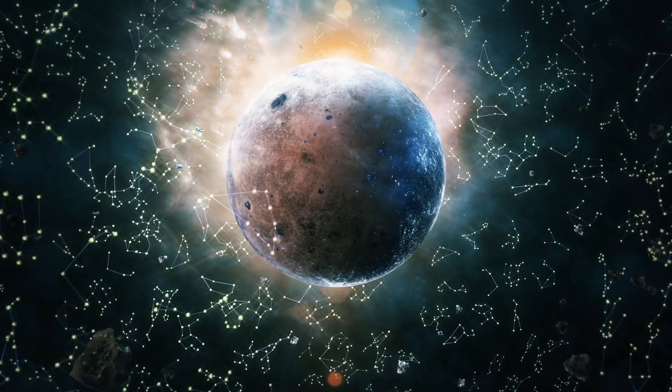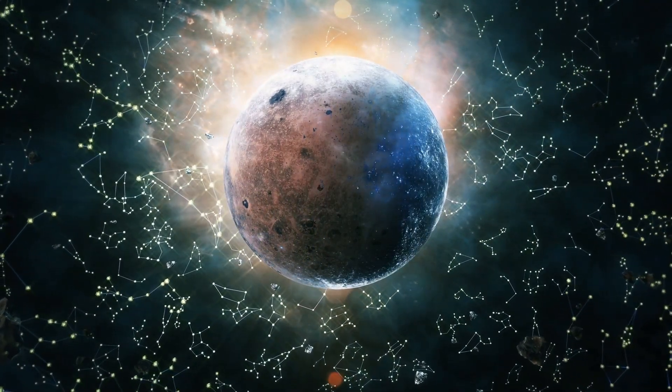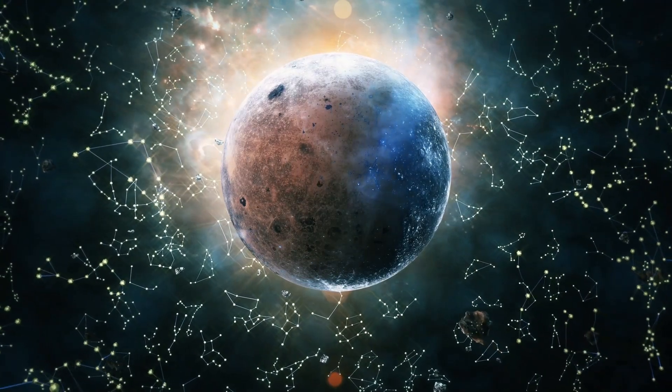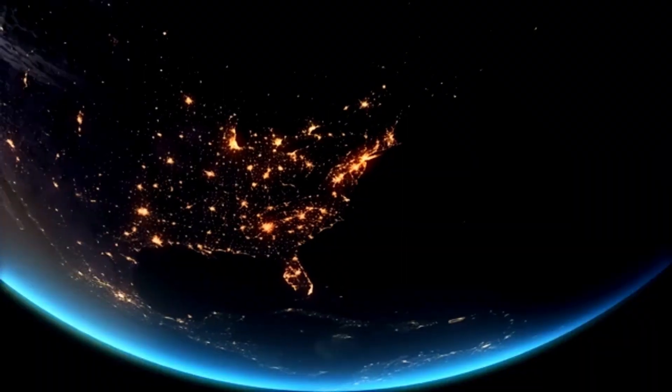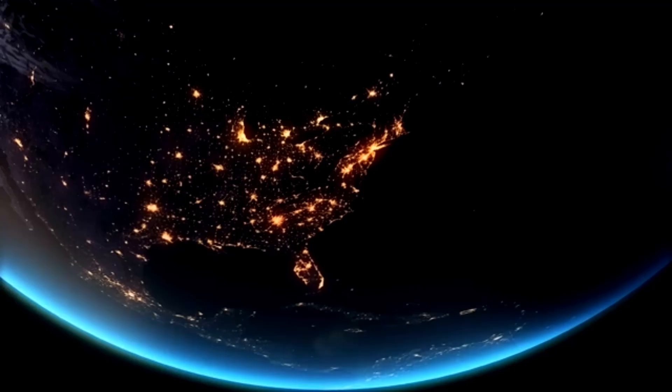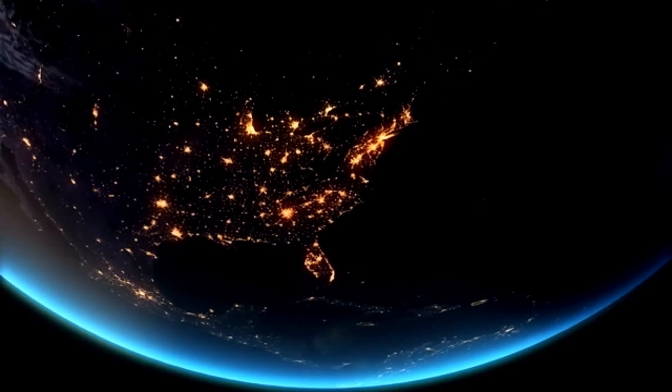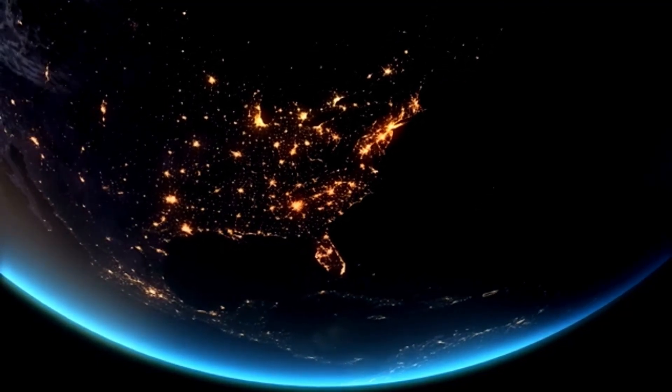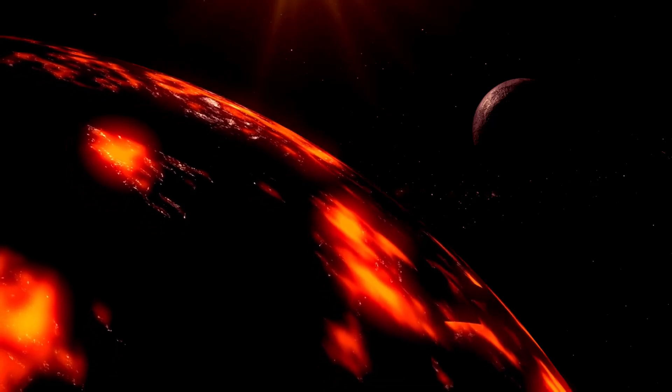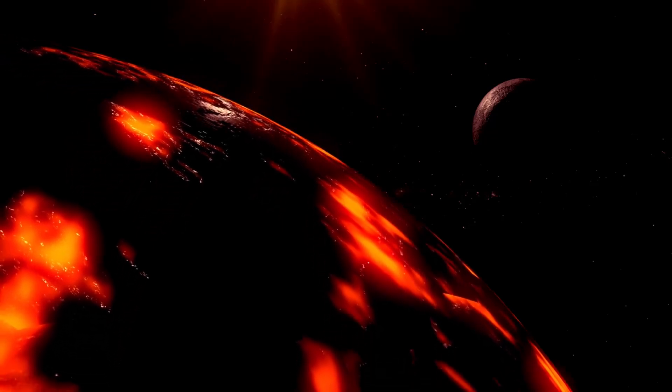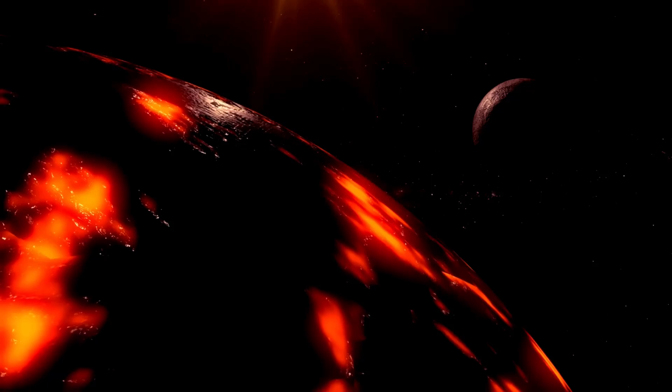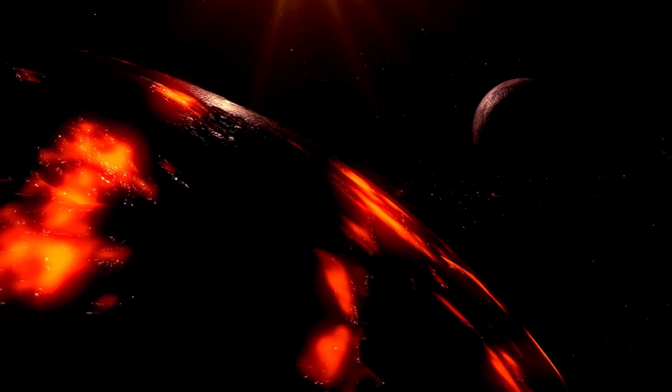The telescope focused on Proxima Centauri b, the closest exoplanet to Earth, revealing unusual bright lights emanating from it. What could be the cause of these city lights on Proxima Centauri b? Could this indicate the presence of life beyond our planet? Join us as we delve into how the James Webb telescope detected these extraordinary objects in space.